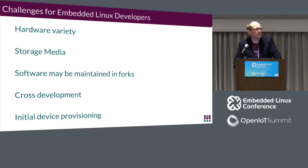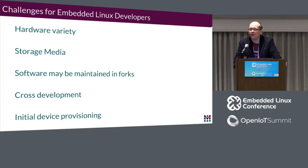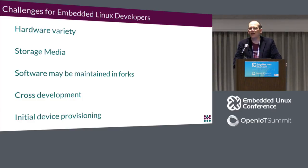Cross-development takes some getting used to — the idea of developing code on one machine and running it on another. We are seeing a lot of new embedded Linux users coming in from Node.js communities doing IoT devices, so these things are very relevant to newcomers. And the initial device provisioning — how do you get that initial image on the device — can be tricky. If you're lucky, it's an SD card. If you have raw flash, you may need to short two pins to enter a special mode.